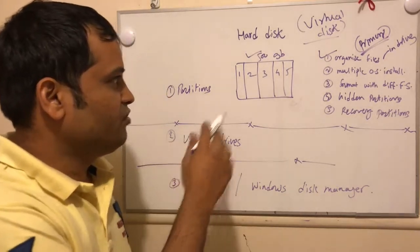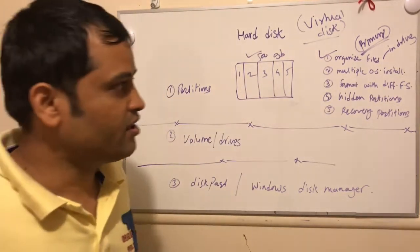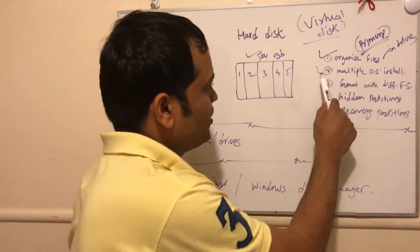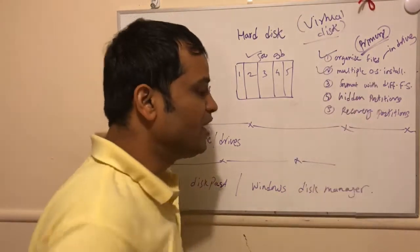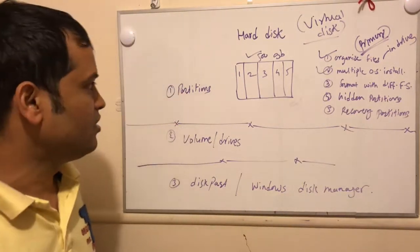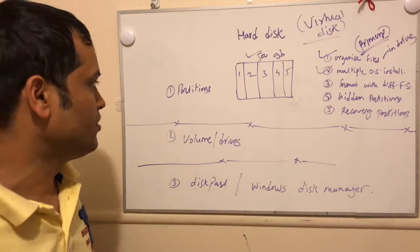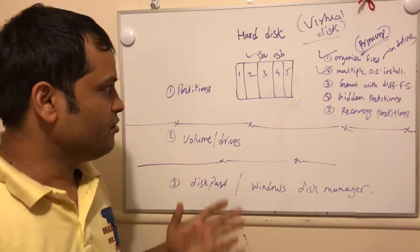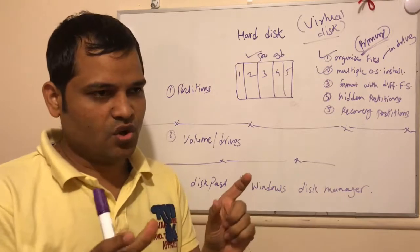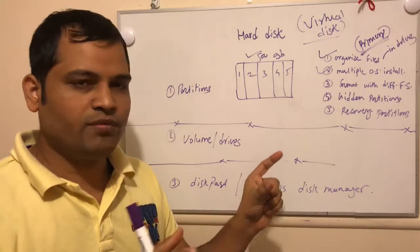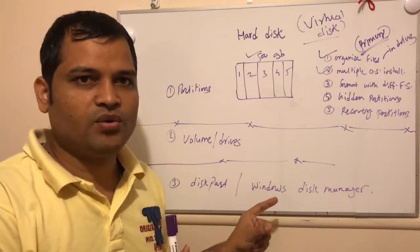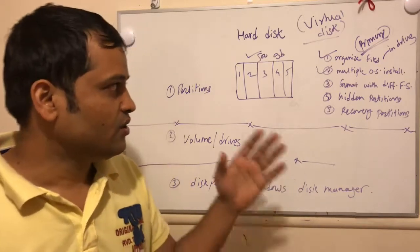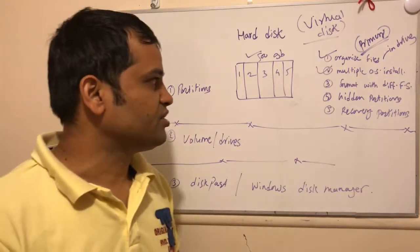With partitions, we can create different volumes or drives. The next thing we can do is have multiple operating systems installed with the help of partitions. We can divide the hard disk into logical sections — one section we can use for Windows and another section we can use for Linux. That is possible only through partitions.